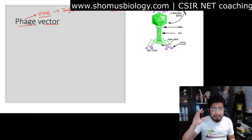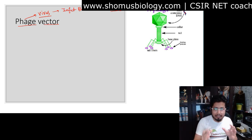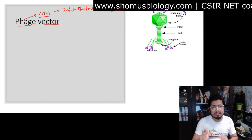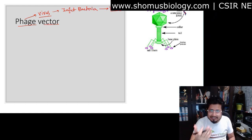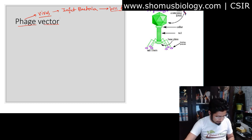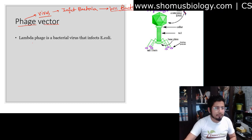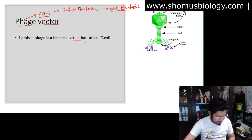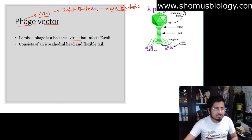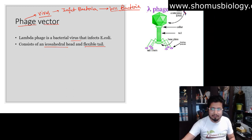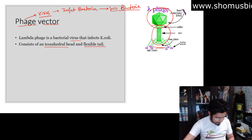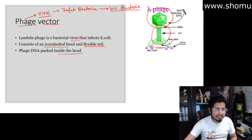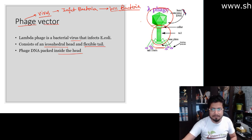The phage will be carrying the target DNA but will lack the capability to cause infection, thus causing disease in bacteria — that is really important. Lambda phage is a bacterial virus. It consists of an icosahedral head and flexible tail, with base plates at the bottom. The phage DNA is packed inside the head.